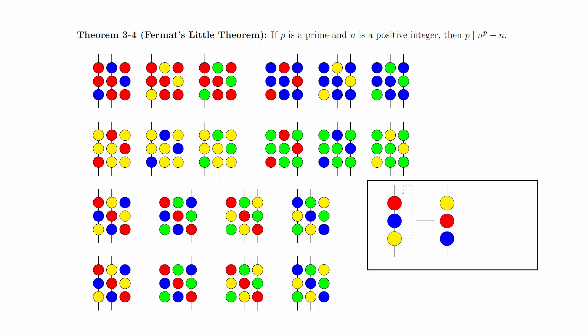Notice that we can take the bottom bead from any string and move it to the top to get a different string. We know that it will be different because we removed all the strings where the beads are all the same color.